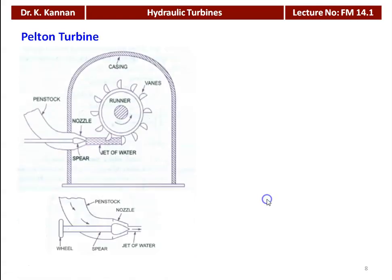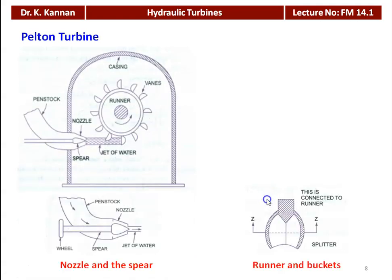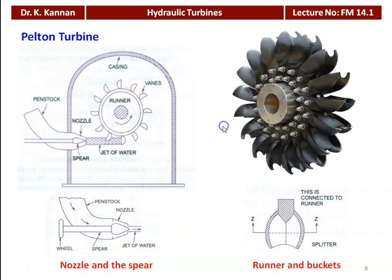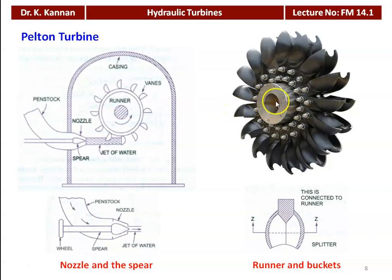Now we will look at the Pelton turbine and its important components. We have a shaft and runner. On the outer periphery of the runner, we have buckets — also called vanes. The buckets are bolted on the runner, and the center hole is for the shaft, which is inserted with a proper mechanical fitting.